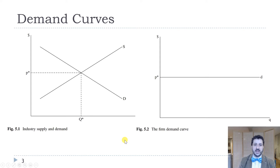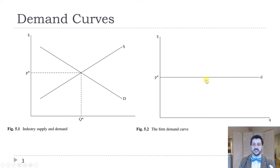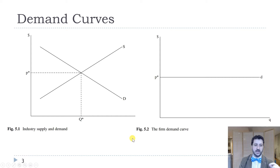In perfect competition, we have a downward sloping market demand curve and an upward sloping market supply curve. But the demand curve that each individual firm faces is flat, because they can sell as much as they want at the market price P star. They can't sell at a higher price and wouldn't want to sell at a lower price, so they face a flat demand curve. Even though the market demand curve slopes down, the firm demand curve is horizontal.